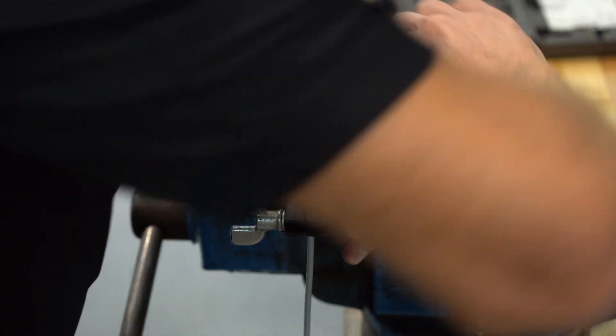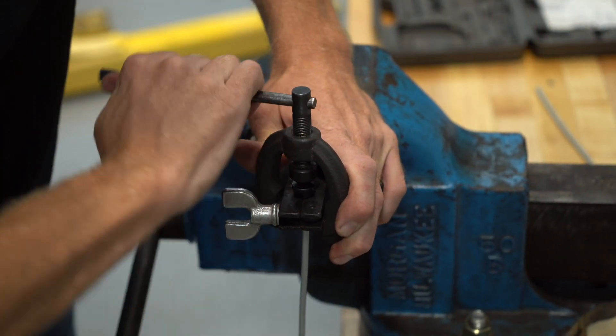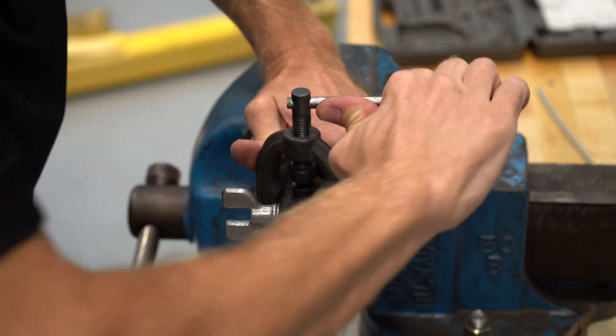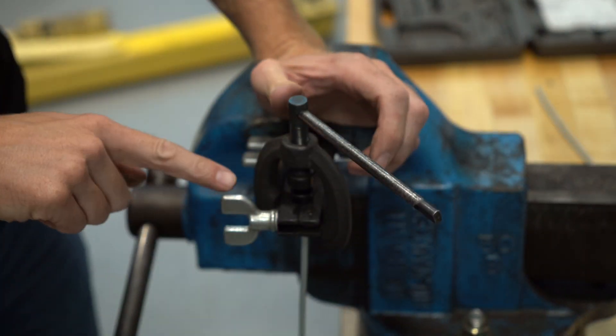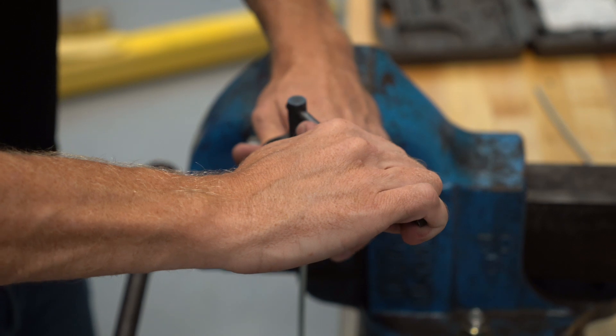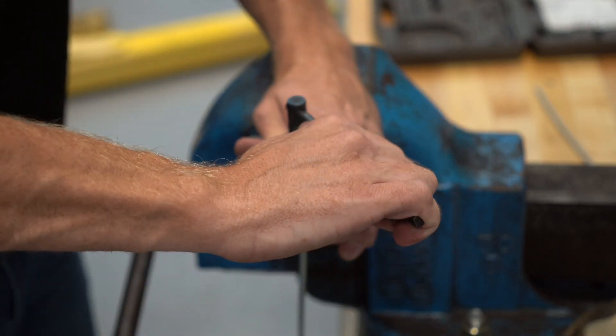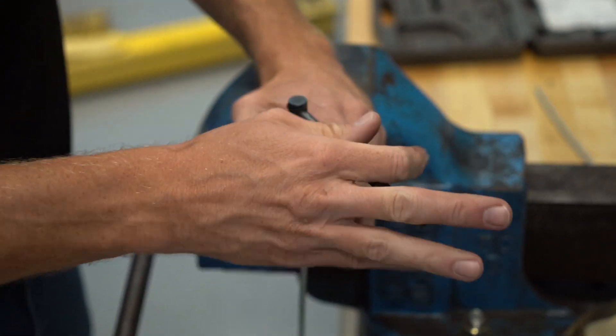Then you're going to crank this down until the forming die becomes flat with the surface of the tool. How do I know that? Obviously I can see it, and I noticed that this got really tight.